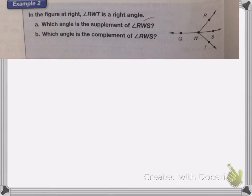Now we're going to talk about complementary and supplementary angles. Complementary angles are two angles that equal 90 degrees, and supplementary angles are two angles that equal 180 degrees. So complement is 90 degrees, supplement is 180 degrees.